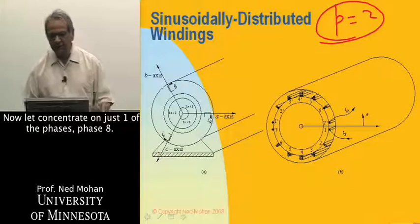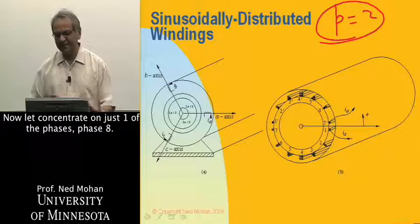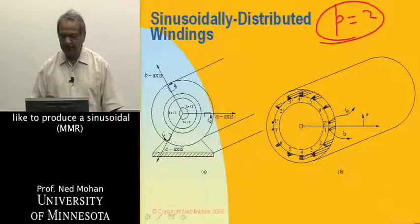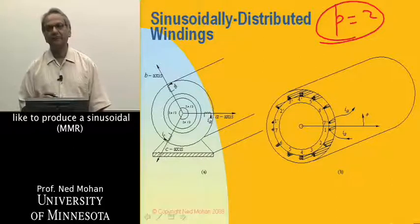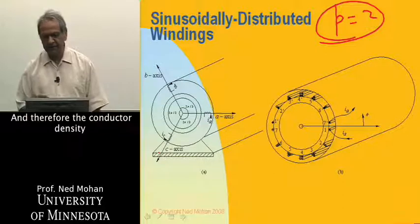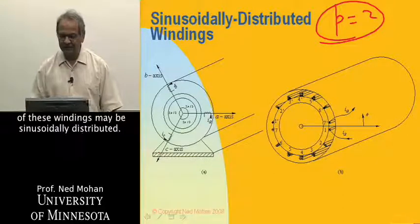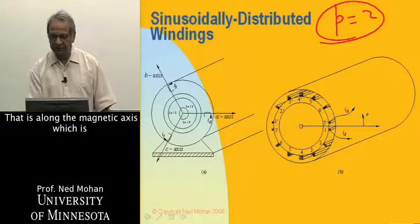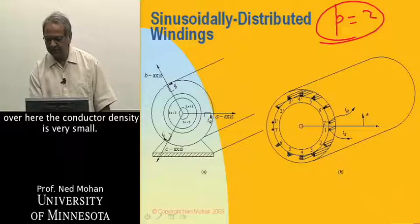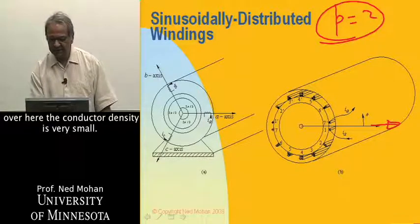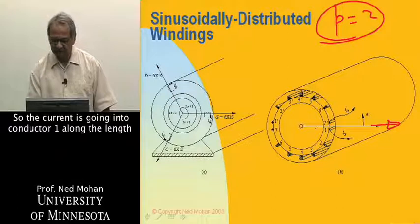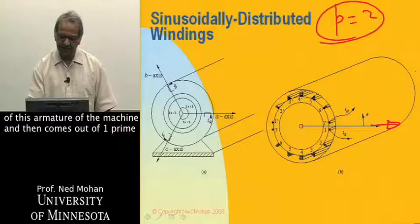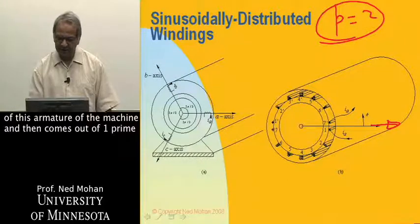All right. Now, let's concentrate on just one of the phases, phase A. And what we see here is that we would like to produce a sinusoidal MMF in space, in air gap. And therefore, the conductor density of these windings may be sinusoidally distributed. That is, along the magnetic axis, which is over here, the conductor density is very small. So the current is going into conductor one along the length of this armature of the machine,